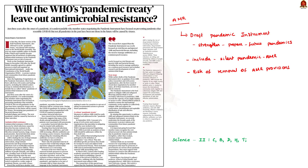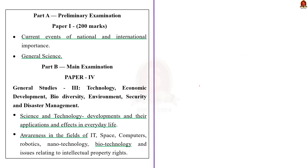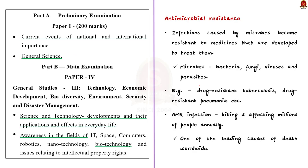In this discussion, we will understand the points provided in this article. Before that, take a note of the syllabus relevant to this topic. Now let us look at antimicrobial resistance. Antimicrobial resistance is the process by which infections caused by microbes become resistant to the medicines developed to treat them. To put it simply, AMR refers to the resistance of the infection-causing microbes to the antibiotic medicines.